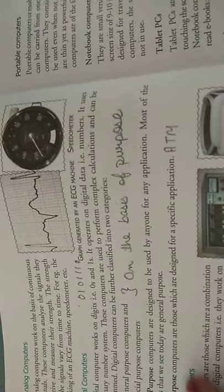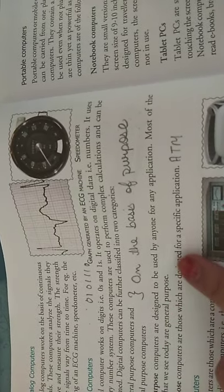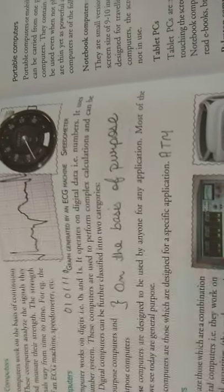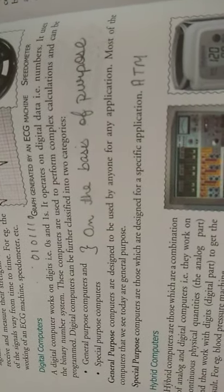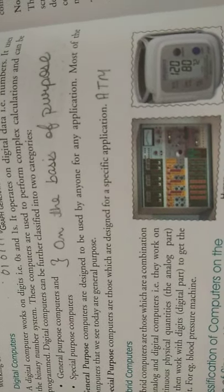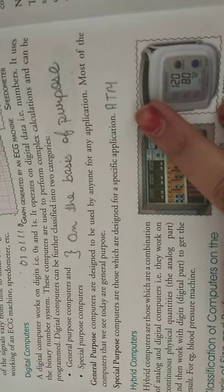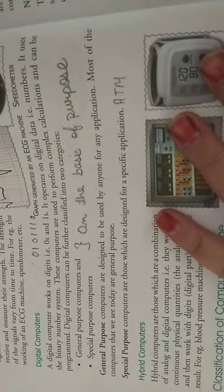General purpose computer are designed to use for anyone. Koi bhi isko use kar sakta hai. Generally jo ham computers dekhte hain, woh general purpose ke hote hain. And special purpose - name se ham ko identify ho raha hai - aise computers jo kisi specific application ke liye banaye gaye hain. For example, ATM. ATM kiske liye banaya gaya hai? Paise nikalne ke liye. Uske liye proper machine banani padegi. Toh yeh special purpose ka digital computer hai.